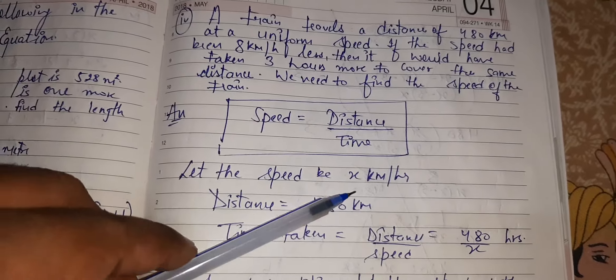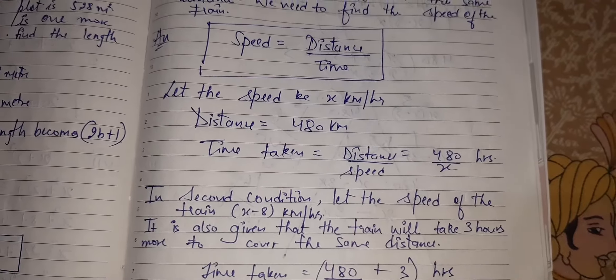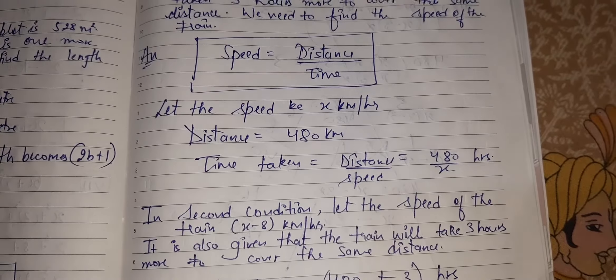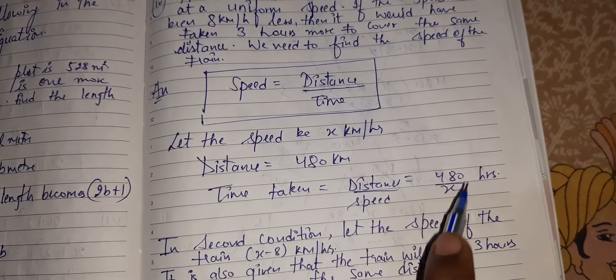As I know, speed is equal to distance upon time. This is the main formula. Let the speed be X km per hour. Distance is 480. Time taken. Remember, this is the T1. Time taken is distance upon speed. Distance is 480, speed is X. Got it?